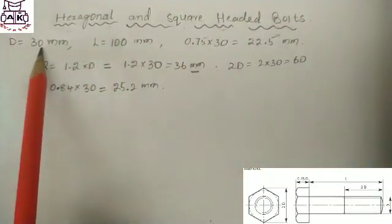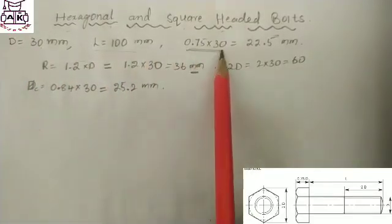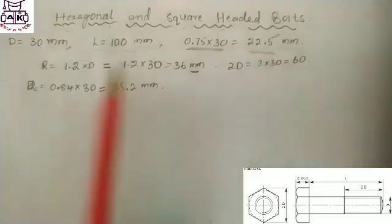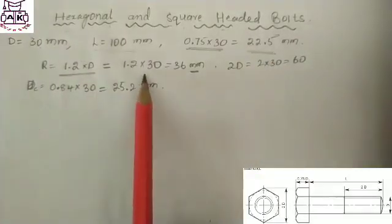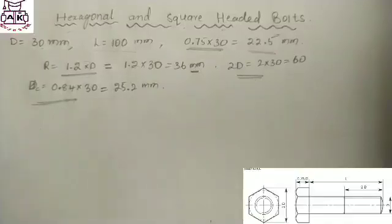Diameter equal 30 mm, length equal 100mm, 0.75*2D. Please see the dimensions 0.75*2D on the screen of the diagram. Then radius, then 2D, DC. Please see how to take the values.